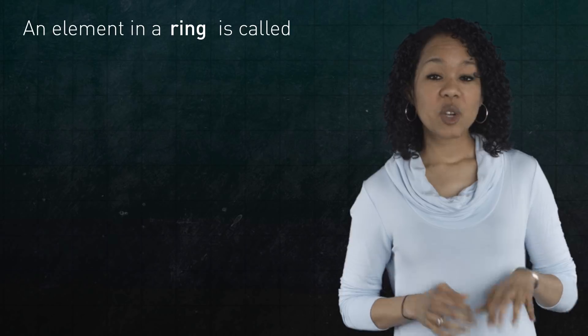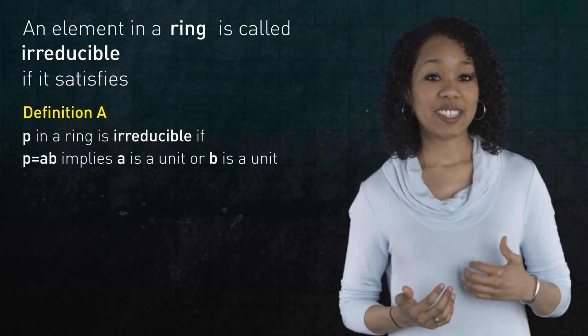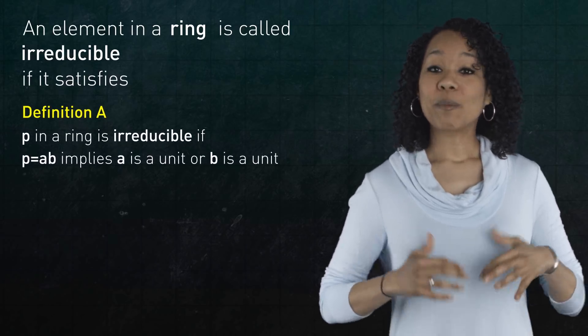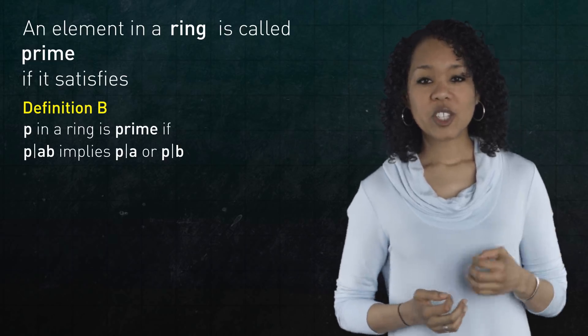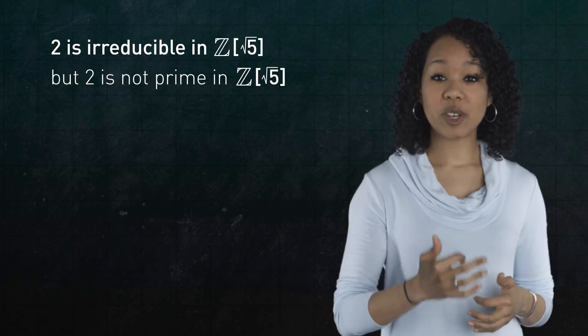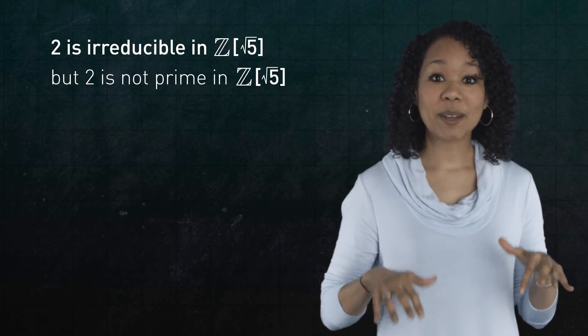An element in a ring is called irreducible if it satisfies definition a, and it's called prime if it satisfies definition b. So earlier, we saw that 2 is irreducible in Z adjoined root 5, but it is not prime.